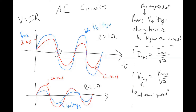For AC circuit problems: the problem will either give you the RMS value of current and voltage directly, or give you the maximum and you'll need to calculate the RMS value. Note that resistance doesn't have an RMS value — resistance is not alternating with time, only the voltage and current are.